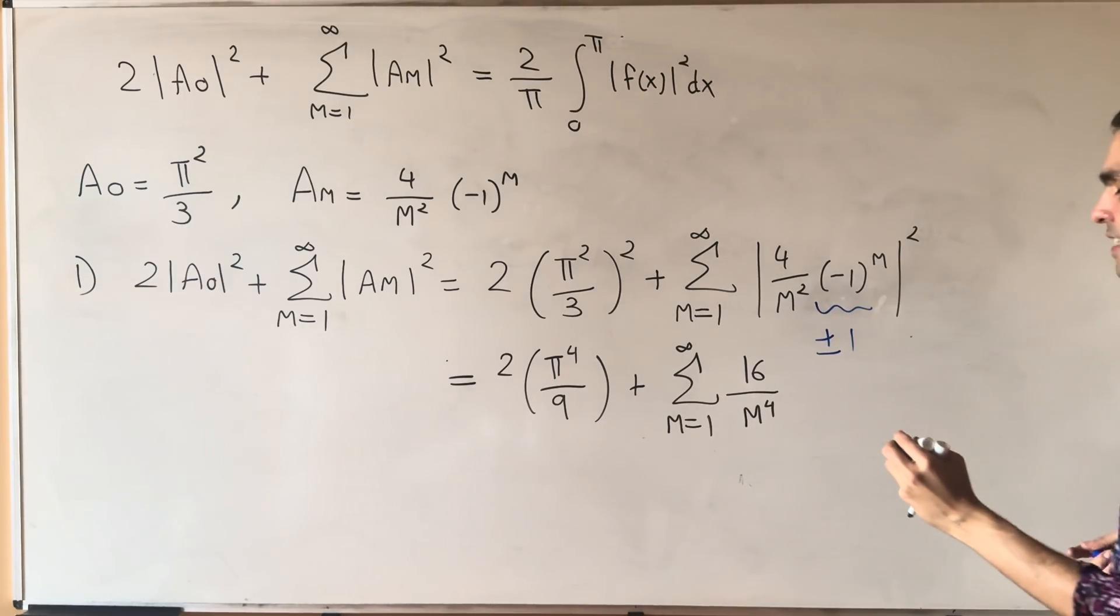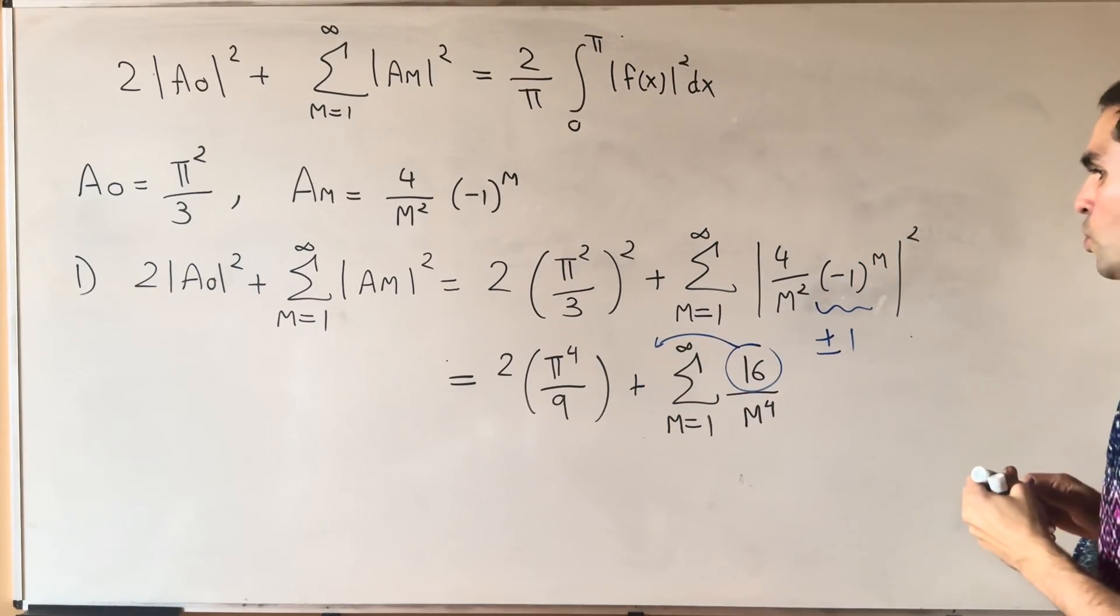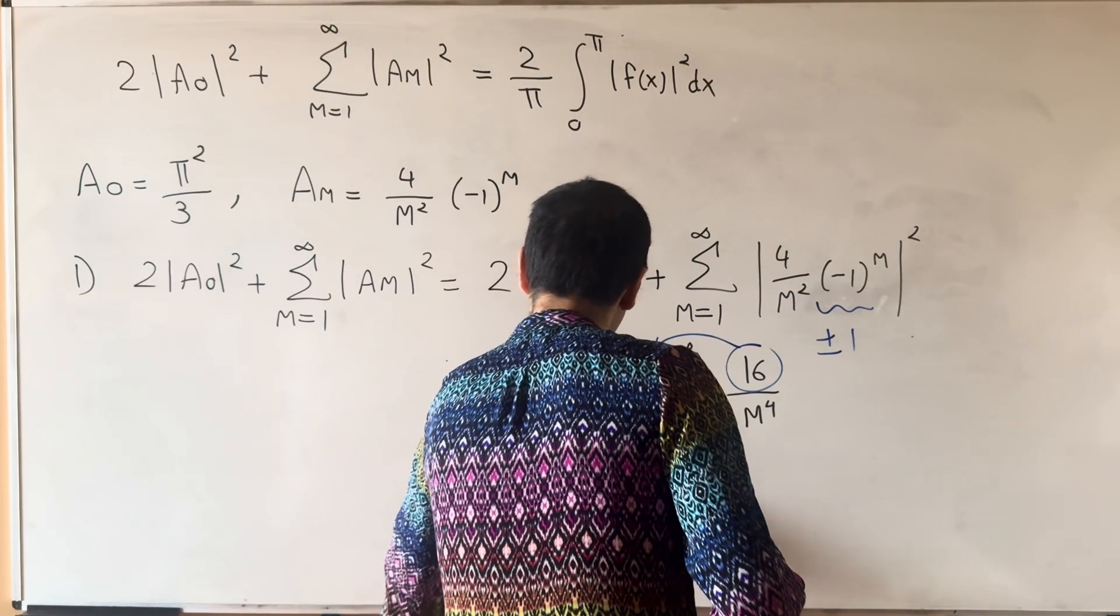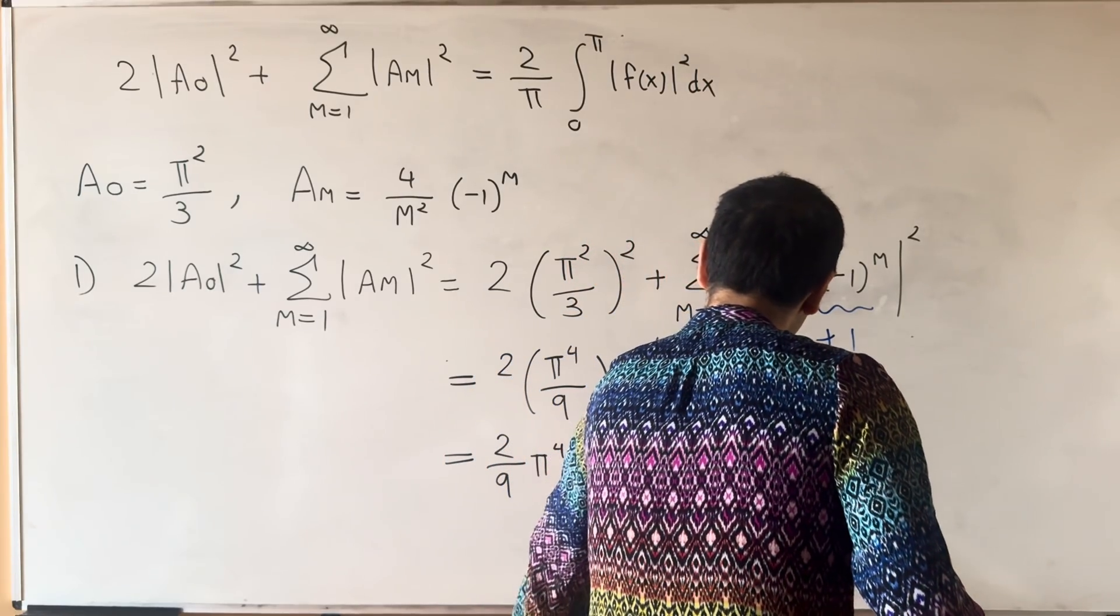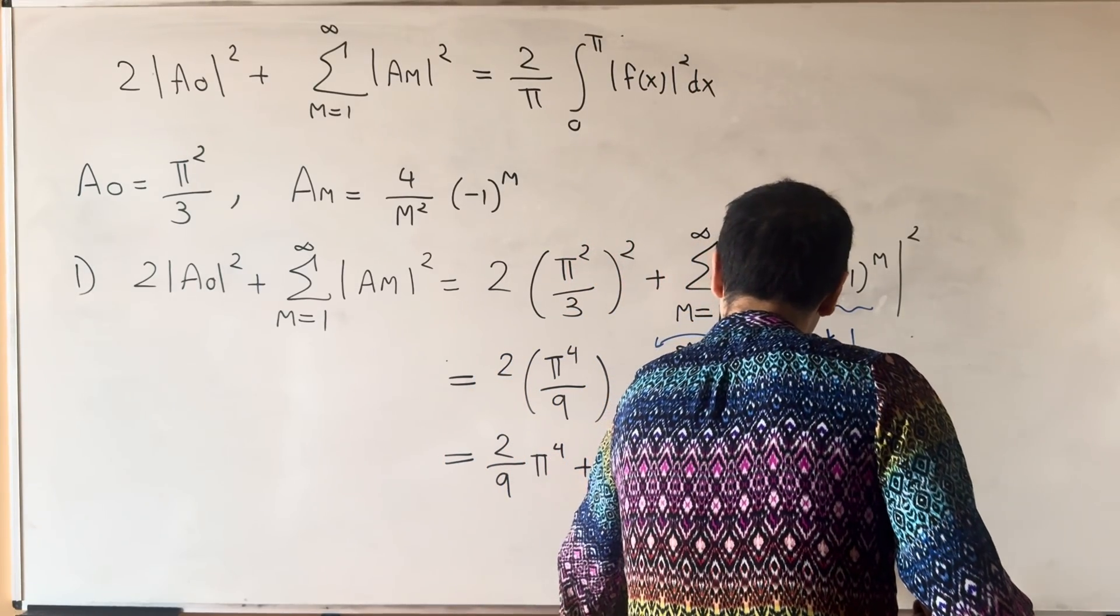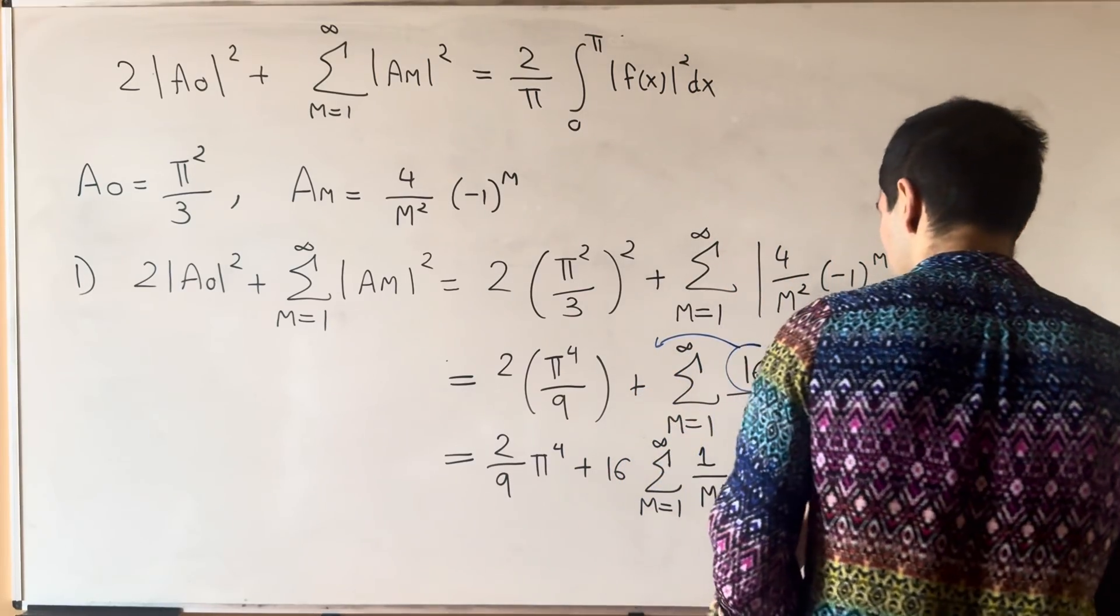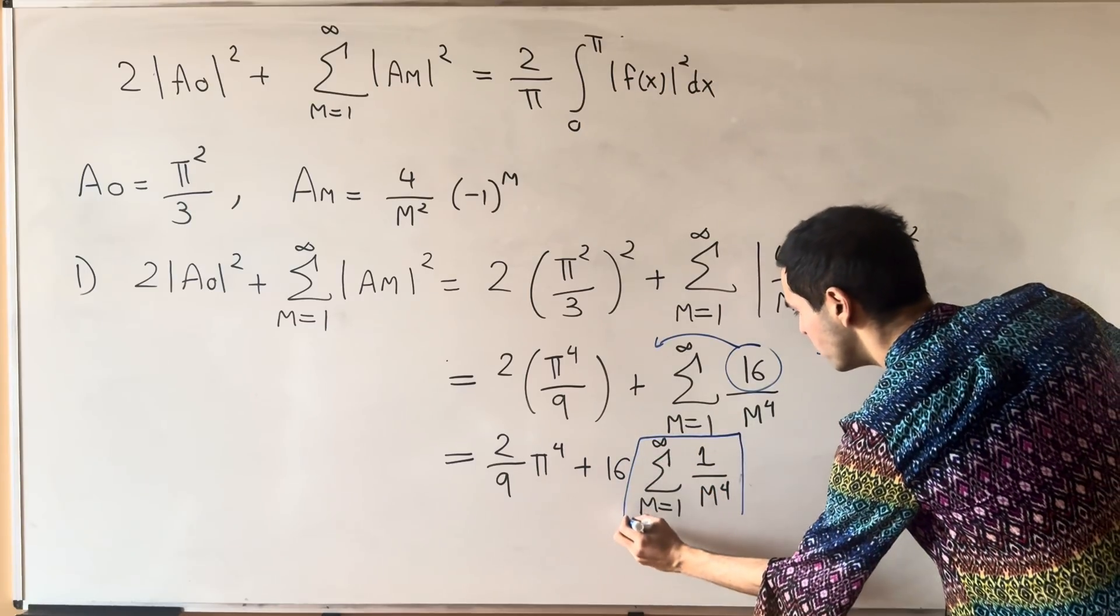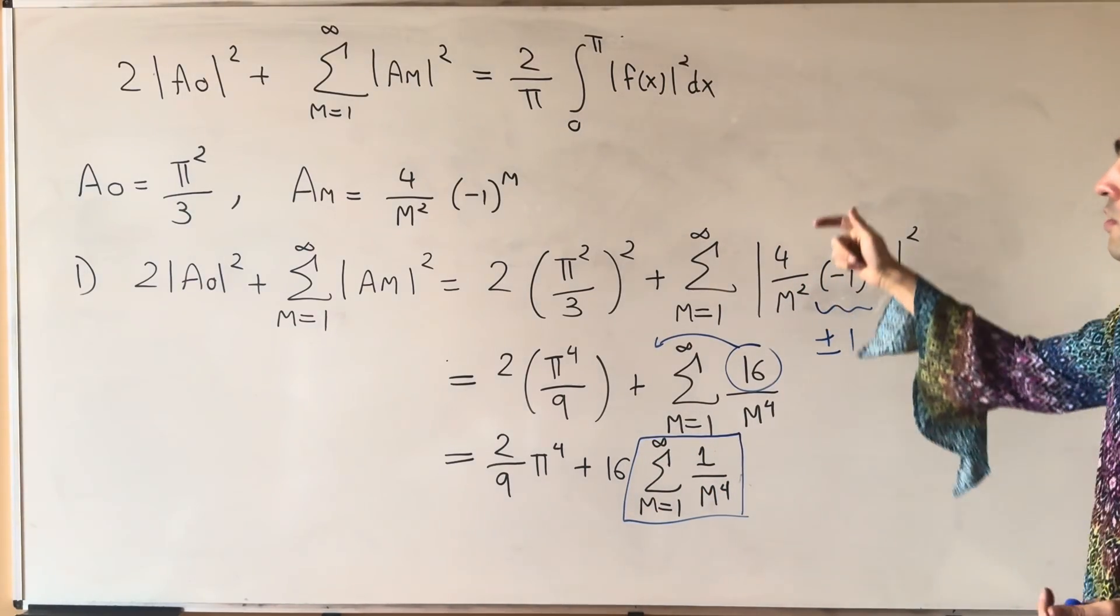And then that 16 once again comes out and we're left with 2 pi, if you want, 2 ninths pi to the 4th plus 16 and then the sum from 1 to infinity of 1 over m to the 4th. Which again, it's a good sign because that's precisely the sum that we wanted to find.